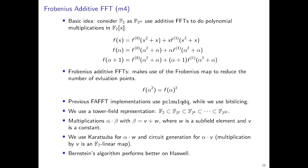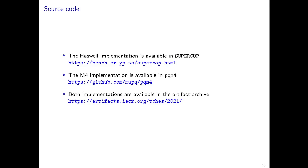And finally, we found that Bernstein's algorithm still performs better on Haswell. We actually tried the same algorithm on Haswell, but it seems that Bernstein's algorithm is still a bit better. Finally, you can find our source code online. Our Haswell implementation is already available in SUPERCOP. Our M4 implementation is available in PQM4. And both implementations are available in the Artifacts archive. So that's all of my talk. Thank you for listening.